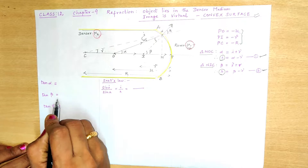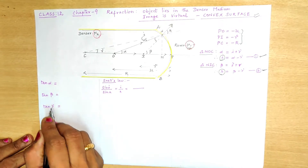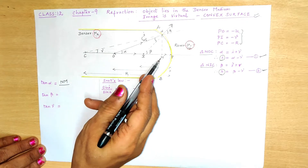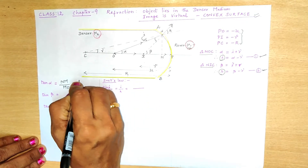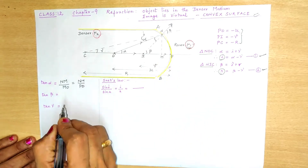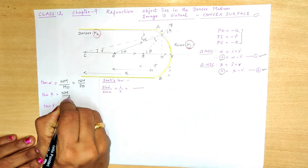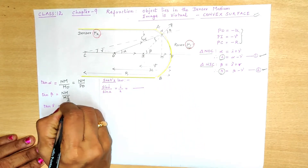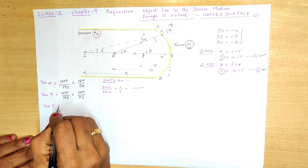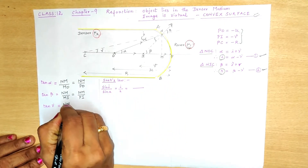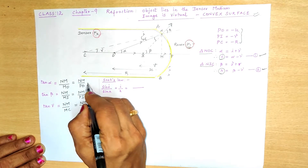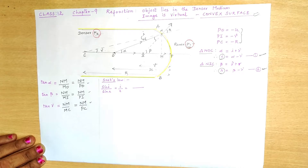Therefore, tan alpha ≈ alpha, tan beta ≈ beta, tan gamma ≈ gamma. From the ray diagram: alpha = NM/PO (since M is very close to P), beta = NM/PI, and gamma = NM/PC. The three expressions for alpha, beta, and gamma are now ready.